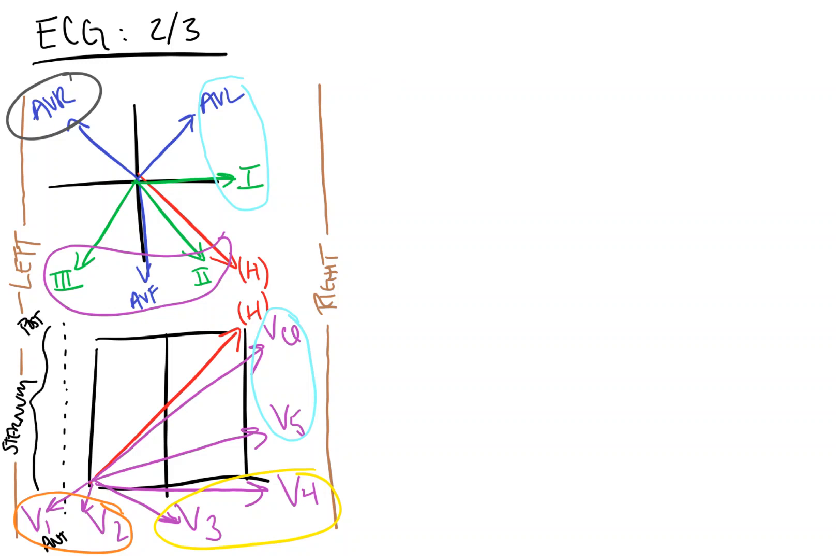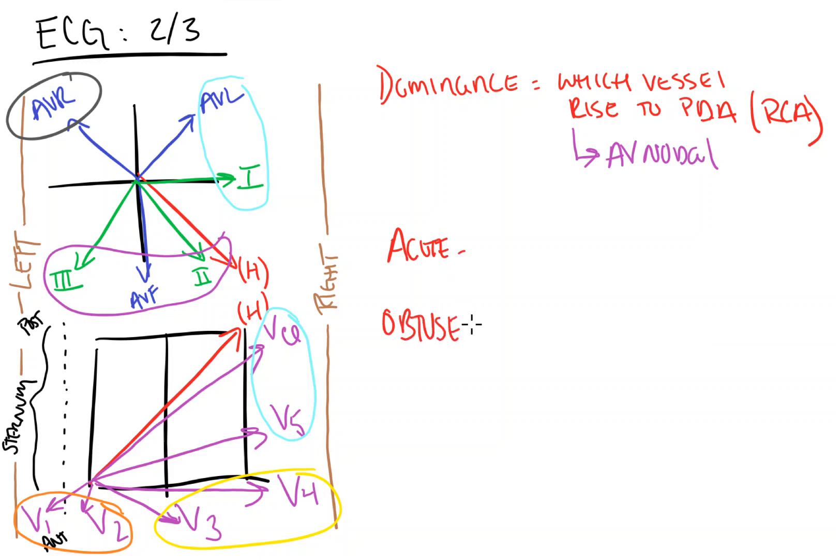So, dominance is something that you're going to hear. And what dominance refers to is which vessel gives rise to the posterior descending artery. And in 90% of cases, it's going to be the right coronary artery. The right coronary artery also gives rise to the AV nodal artery. This is something that you're also going to see on your tests and boards. Lastly, you'll have your acute marginal artery and your obtuse marginal artery. And these are branches, acute of the right coronary artery, named because of the acute angle it forms with the heart, and obtuse from the left circumflex, as it forms an obtuse angle on the heart. And then your diagonal arteries are arteries off of the LAD.